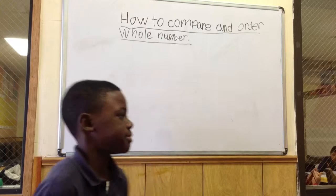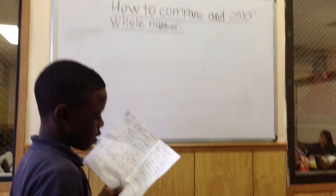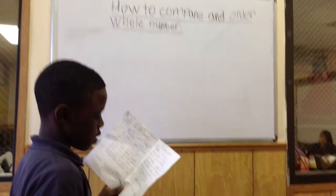My name is Trent. I'm going to show you how to order numbers. To order numbers, we have to compare. For example, the smaller whole number goes in the back and the greatest whole number goes in the front.